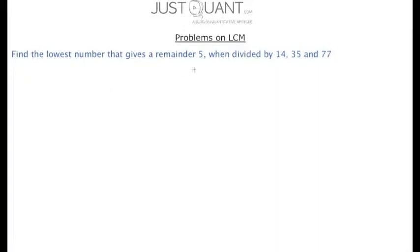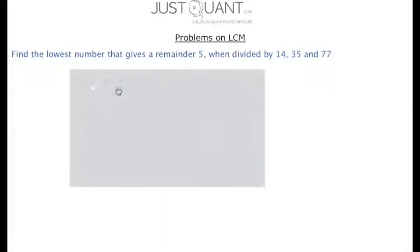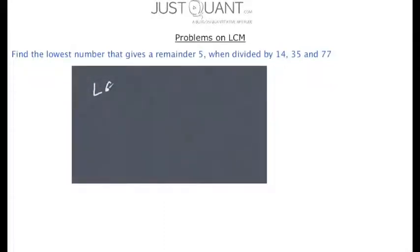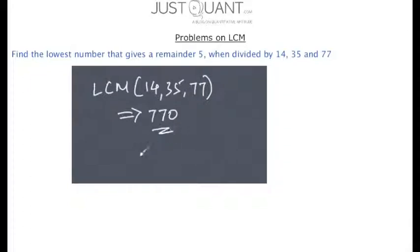In our next problem we need to calculate the lowest number that gives remainder 5 when divided by 14, 35 and 77. In order to solve this, let's first calculate the LCM of 14, 35 and 77, which is 770.